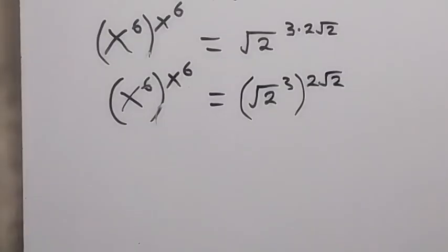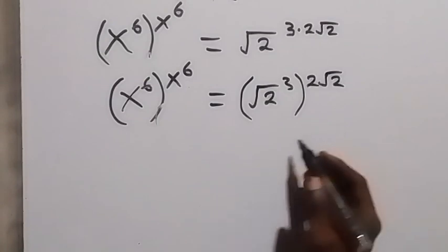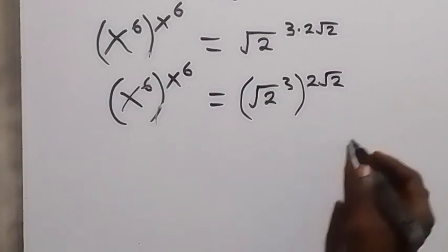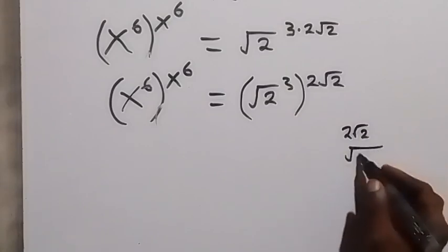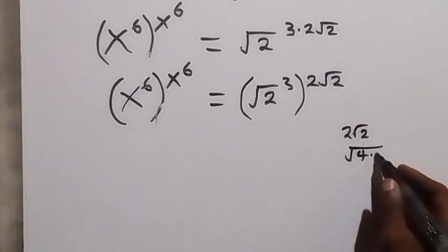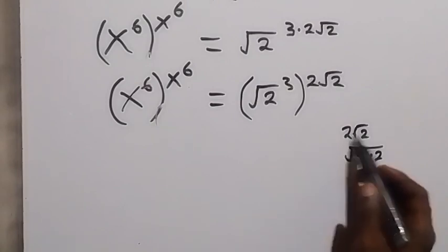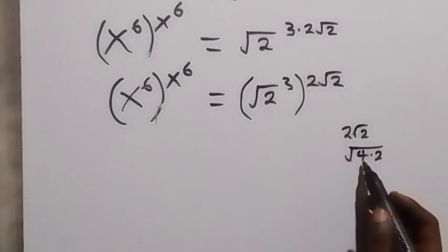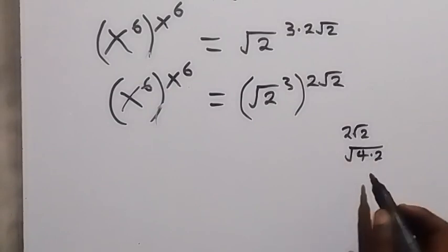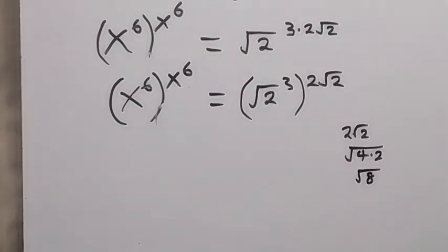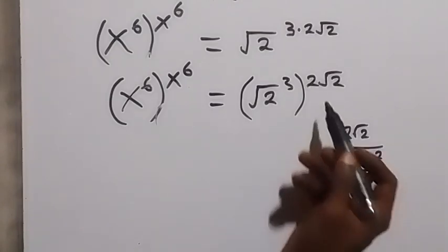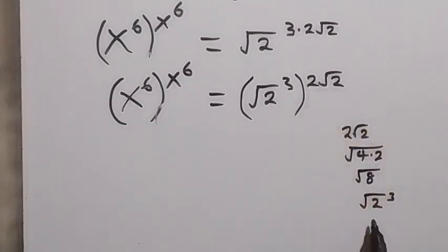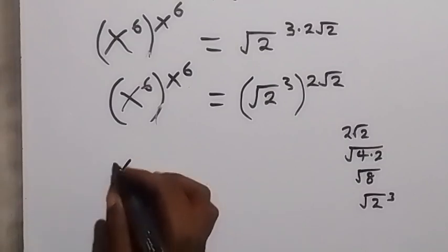From this power of 2 root 2, we can rewrite it. We have that 2 root 2 is the same as root 4 times 2, which is root 8. And root 8 can also be written as root 2 to the power of 3. So from here, root 2 to the power of 3.